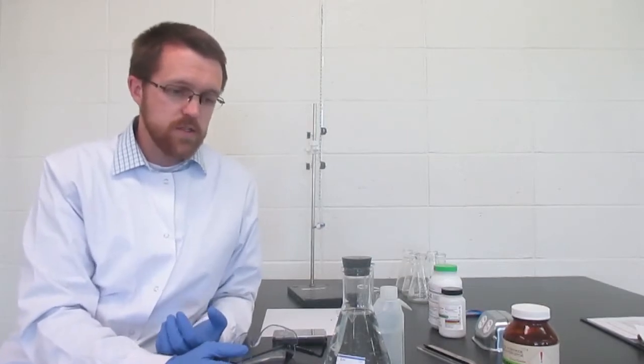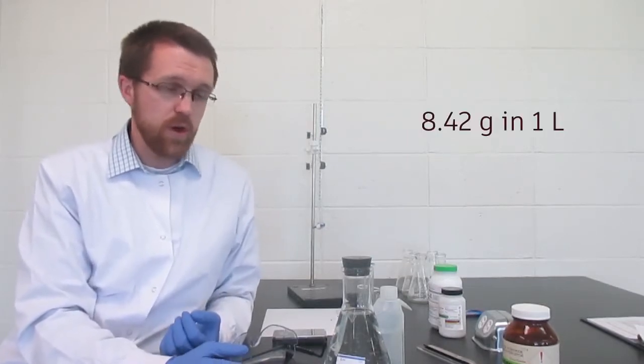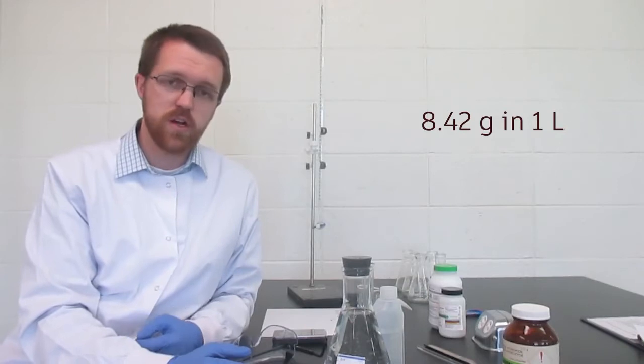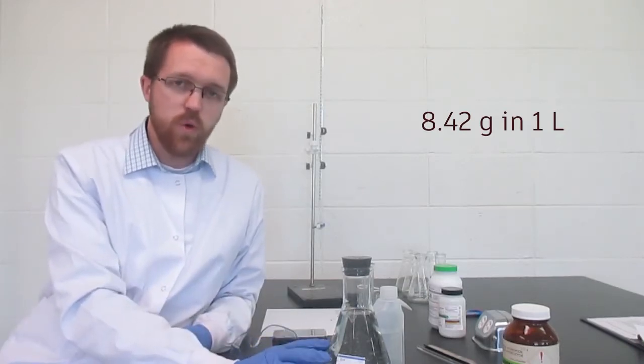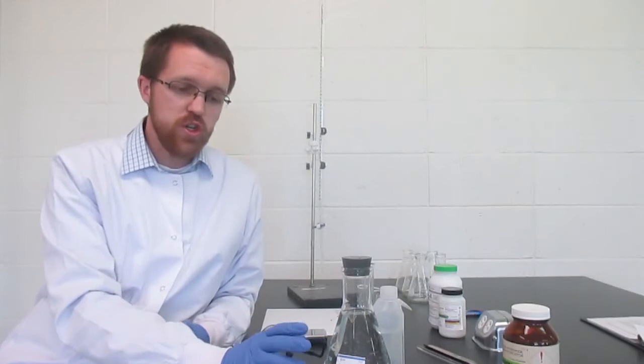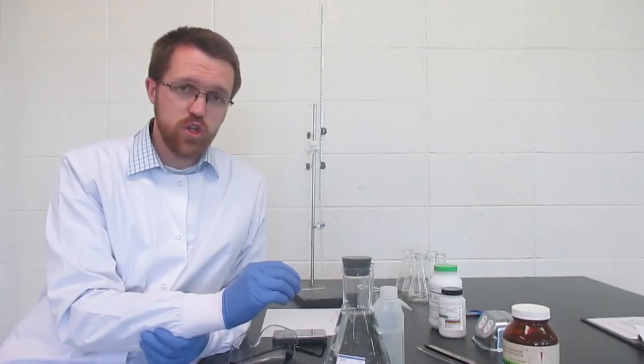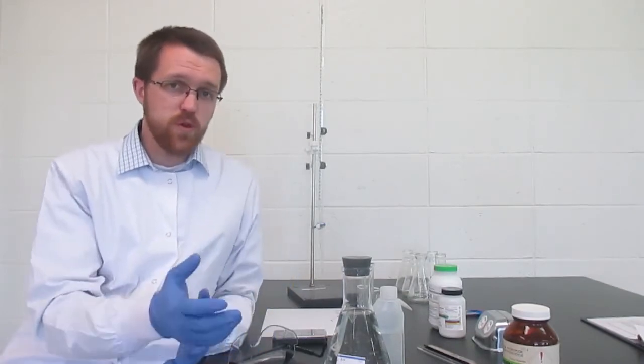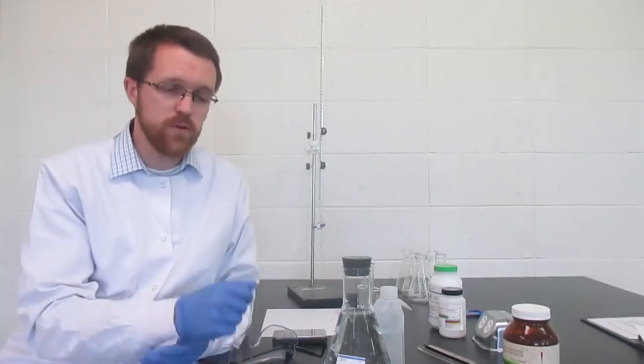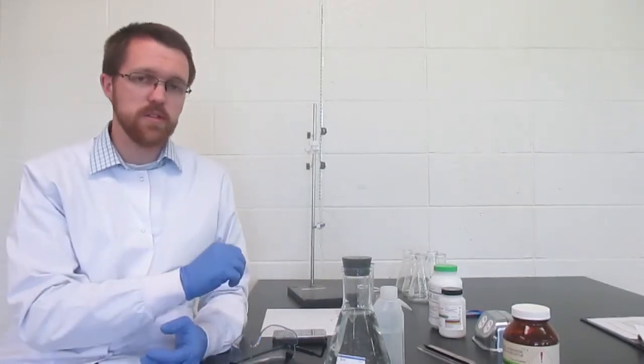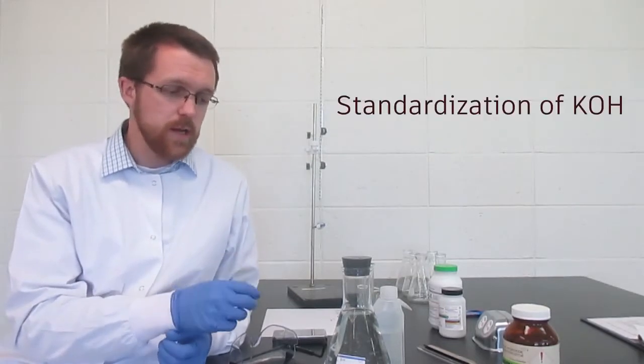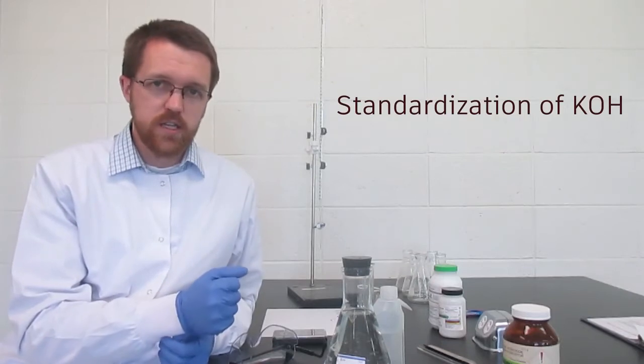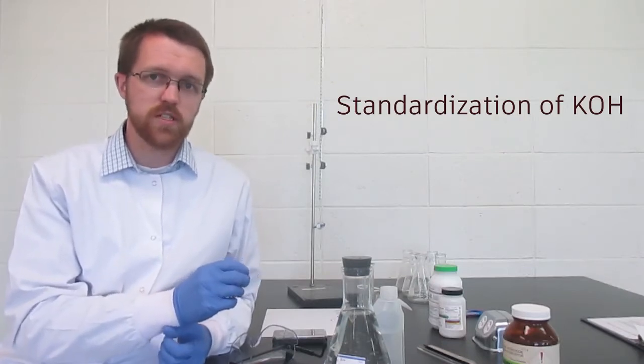So what I did was I dissolved 8.42 grams of potassium hydroxide pellets in about a liter of water, which should get us, assuming it was all potassium hydroxide, about 0.15 moles per liter. But again, I don't know if that 8.42 grams was all potassium hydroxide or if there was some water in there. So that's the purpose of this lab in figuring out the concentration of the potassium hydroxide. We call that standardization, so we're standardizing the potassium hydroxide.